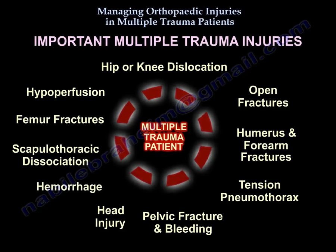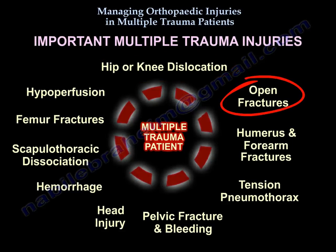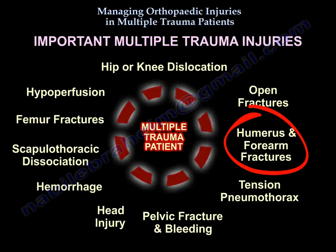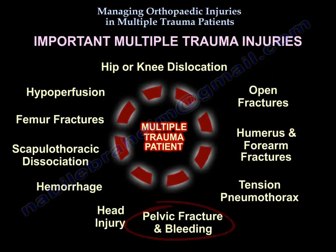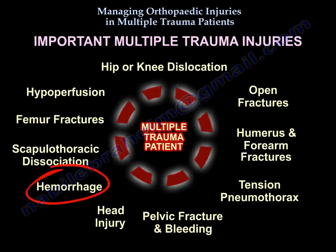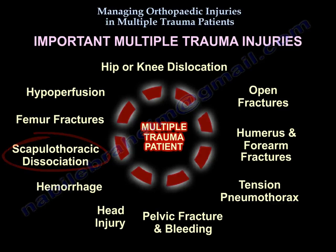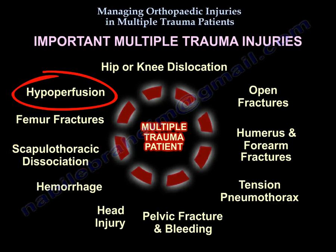The patients will come with a hip or knee dislocation, open fractures, humerus and forearm fractures, tension pneumothorax, pelvic fracture and bleeding, head injury, hemorrhage, scapulothoracic dissociation, femur fractures, and hypoperfusion.